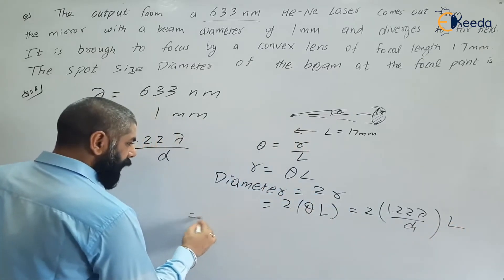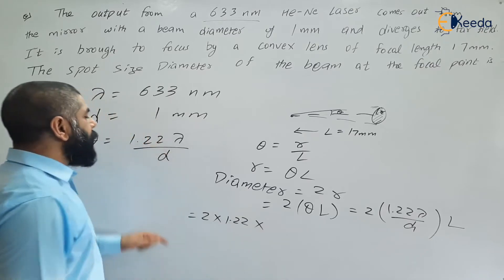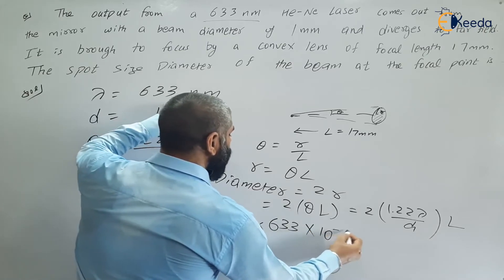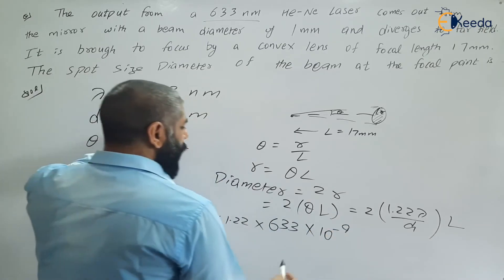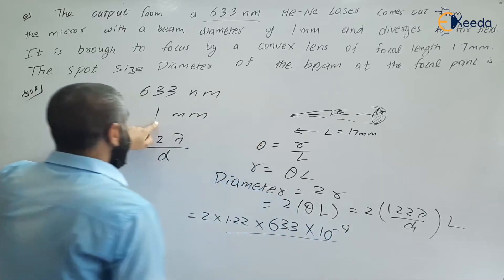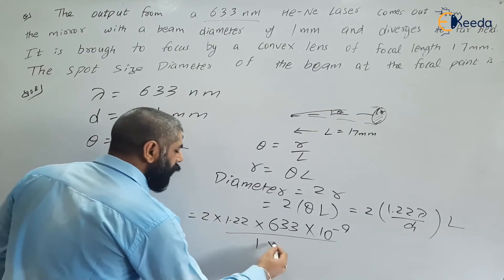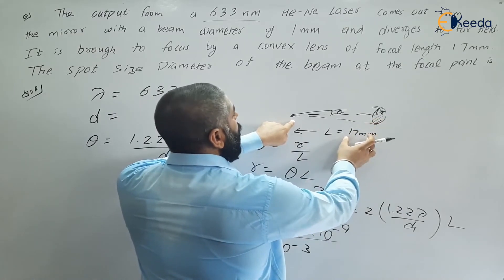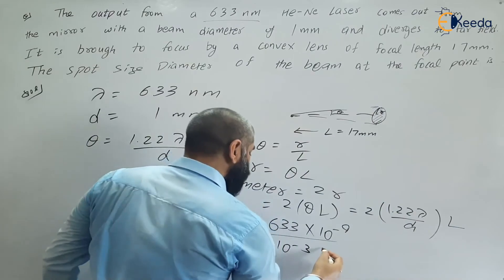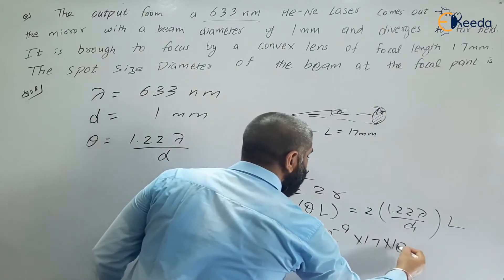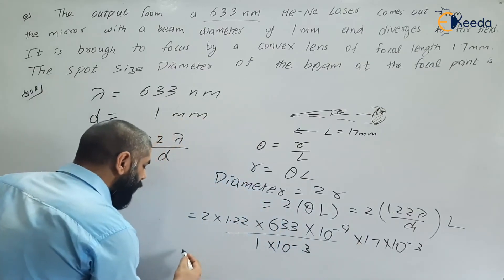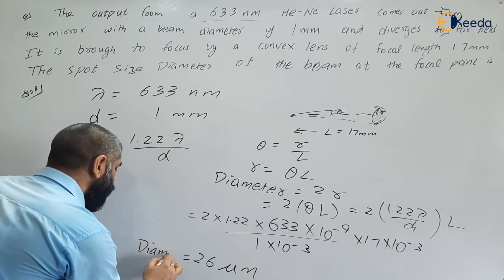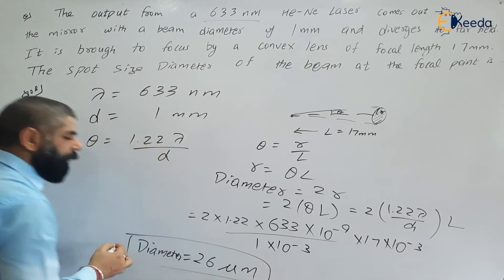Substituting the values: 2 into 1.22, lambda is 633 nanometers (633 × 10⁻⁹ m), the aperture diameter d is 1 mm (1 × 10⁻³ m), and the focal length L is 17 mm (17 × 10⁻³ m). Solving this gives approximately 26 micrometers as the diameter of the circular spot. Thank you.